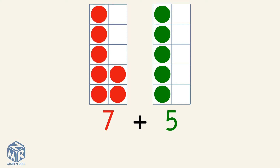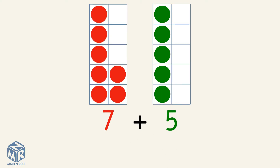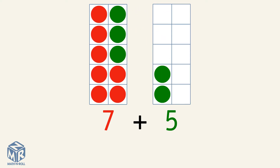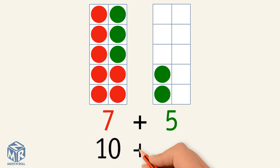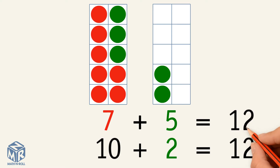To make a 10, 7 needs 3 more counters. So we take 3 counters from 5 and we give it to 7. We made a 10. Now we have 10 and 2. So we add 10 plus 2 to get 12. So 7 plus 5 equals 12.